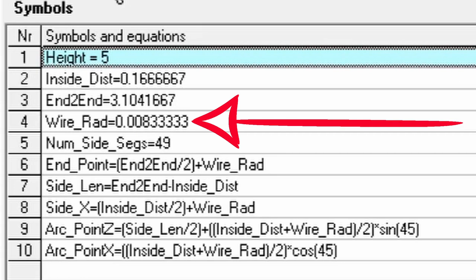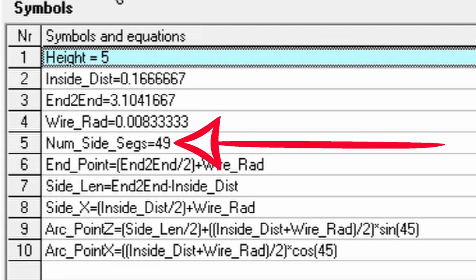Wire_Rad is the radius of the wire or tubing used in the construction of the antenna. Finally, we have Num_Side_Segs, which, as the name implies, is the number of segments in the two sides of the antenna.